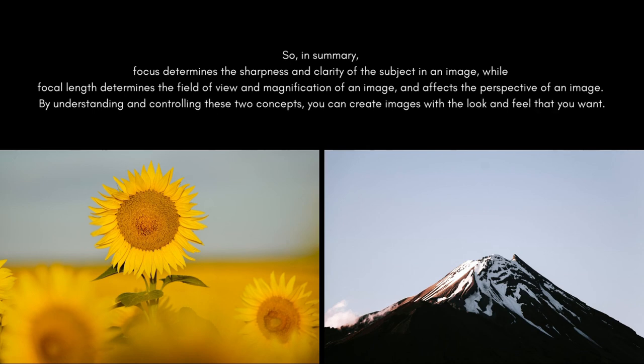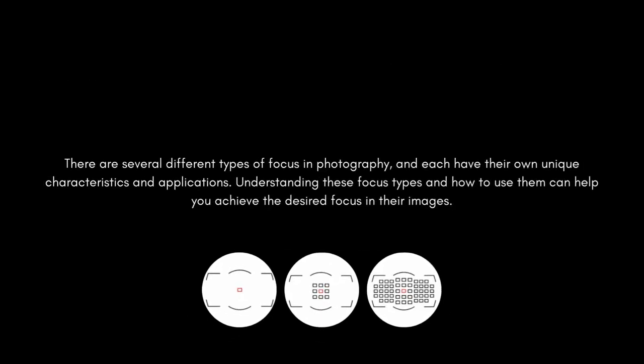In summary, focus determines the sharpness and clarity of the subject in an image, while focal length determines the field of view, magnification, and perspective of an image. By understanding and controlling these two concepts, you can create images with the look and feel that you want. There are several different types of focus in photography, each with their own unique characteristics and applications.